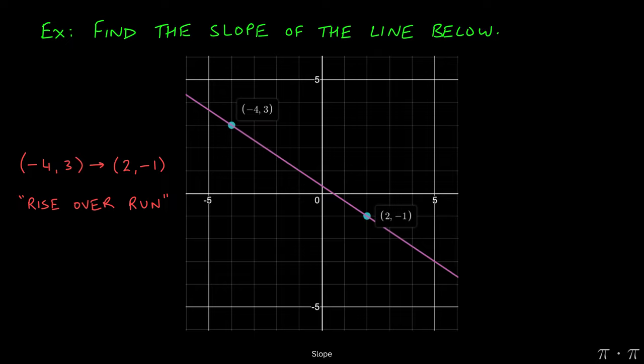Remember that slope is always given as a rise over run quantity. So in order to get from this point to this point, we see that we would need to go down by 4 units, and now we need to move to the right by 6 units. So our rise is negative 4, our run is 6.